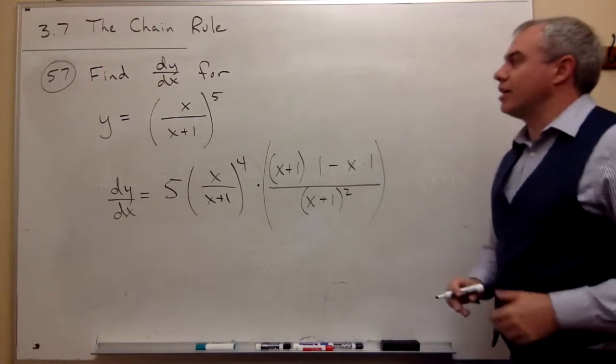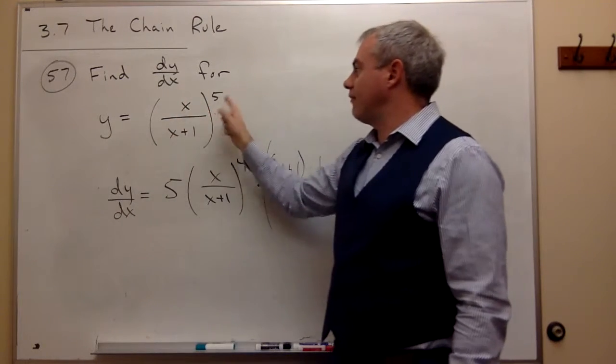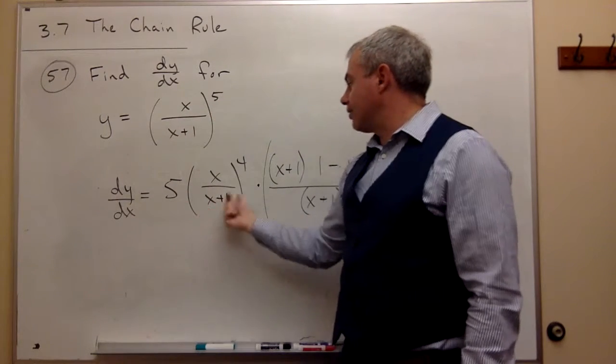So to take this derivative, I started by seeing that I have something to the fifth, and the derivative of something to the fifth is five something to the fourth.